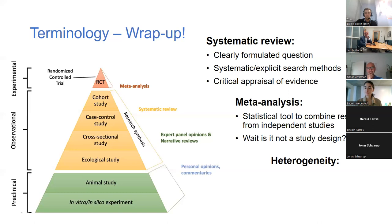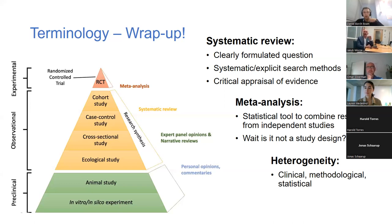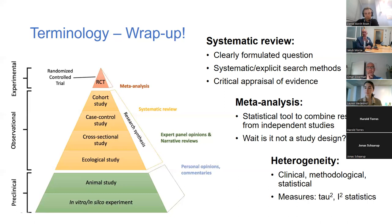An important term sometimes misunderstood is heterogeneity — meaning the variety we observe in study design, methodology, methods applied, and in the actual estimates. We can separately speak about clinical, methodological, and statistical heterogeneity. In terms of numbers, we adopt measures to quantify heterogeneity. In this talk, we'll focus on tau-squared and I-squared statistics, which may be familiar to you.